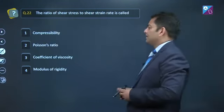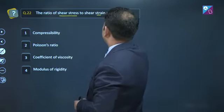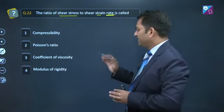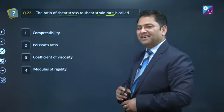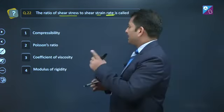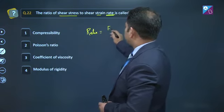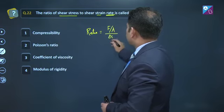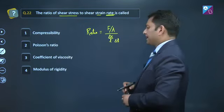Question number 22. Ratio of shear stress to shear strain rate. Agar simply shear stress to shear strain hota, then that would be modulus of rigidity. But yahan rate bhi hai, be careful. Jinhe yeh definition pata hai, that is for coefficient of viscosity. Yeh jo ratio hai, that is shear stress yani tangential force by area, strain rate yani delta x by l. Toh strain ho gaya, rate yani t se divide karte hai.